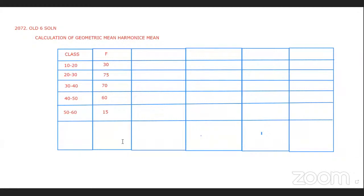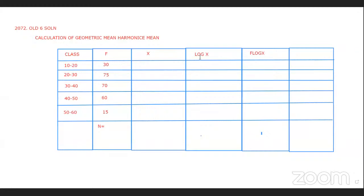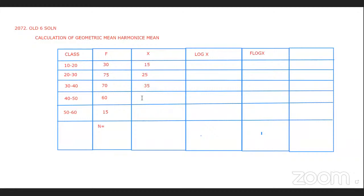And 15. For geometric mean, we use log x and f log x. We take the mid value of each class interval — for example, 20 and 30 divided by 2 gives 25. So mid values are 15, 25, 35, 45, 55. Then we find log x for each.